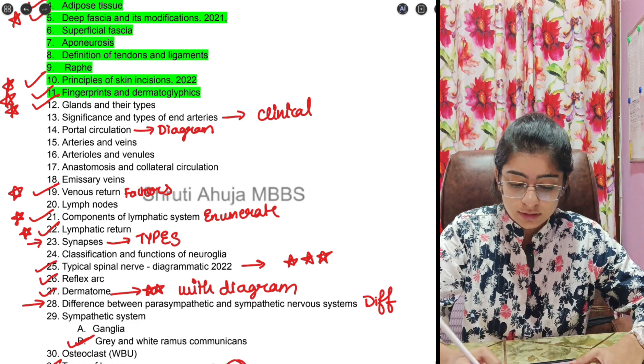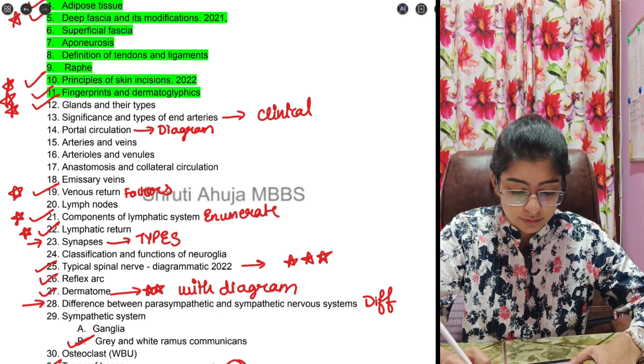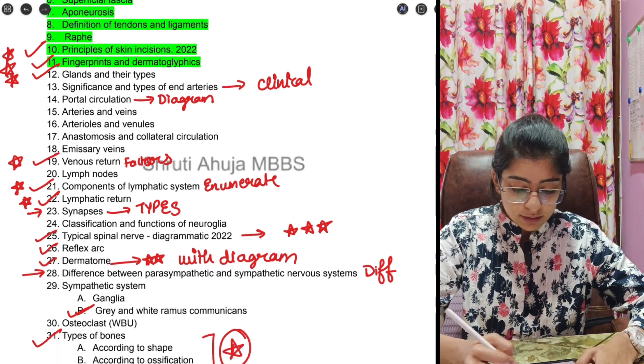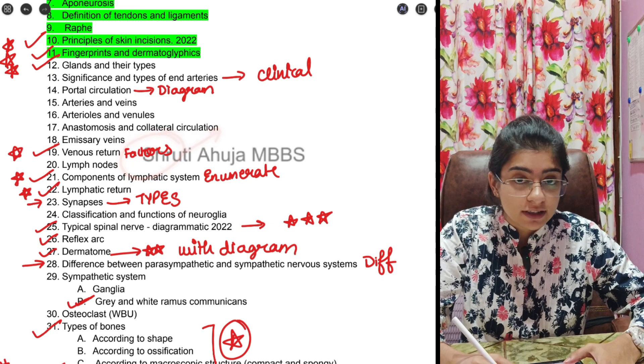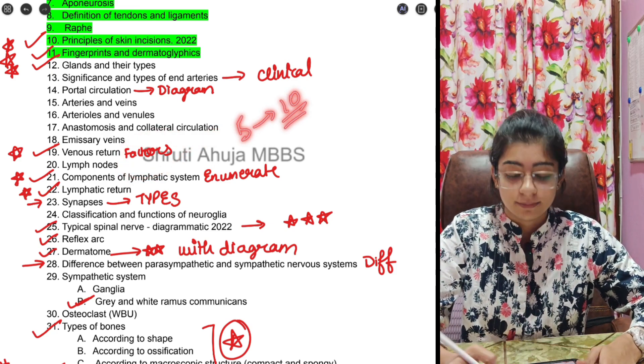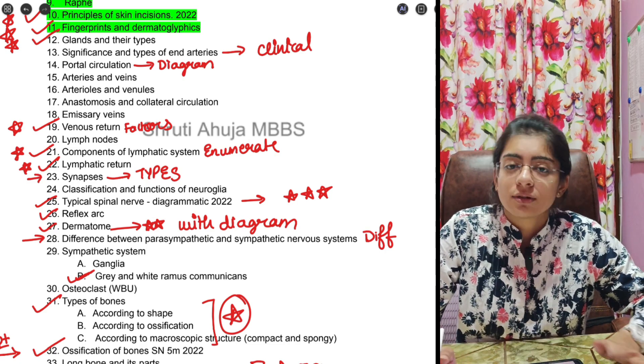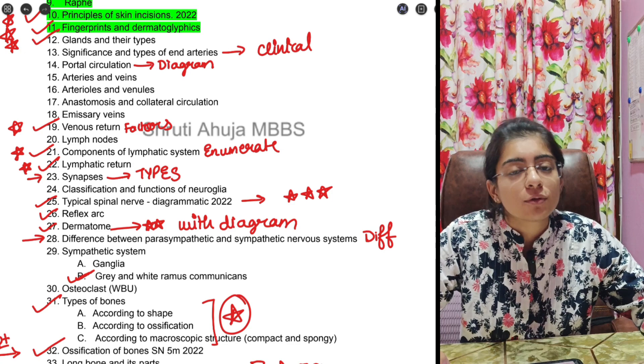Next comes significance of end arteries, it can come as an explain why question also. Portal circulation diagram needs to be learned. Then venous return, again same point as of deep fascia: if 5 mark question is there then 10 points need to be written at least. 10 points are not given in BDC nor given in Vishram Singh. So we need to find that on our end beforehand.